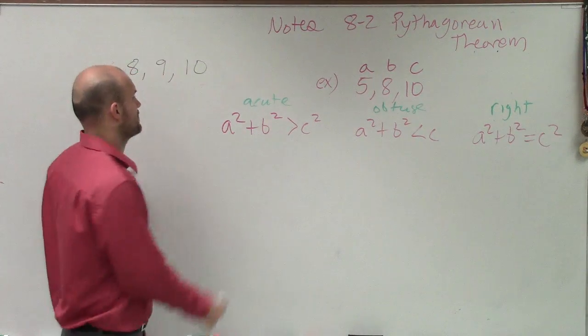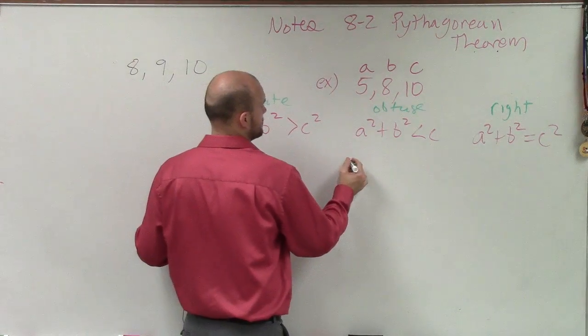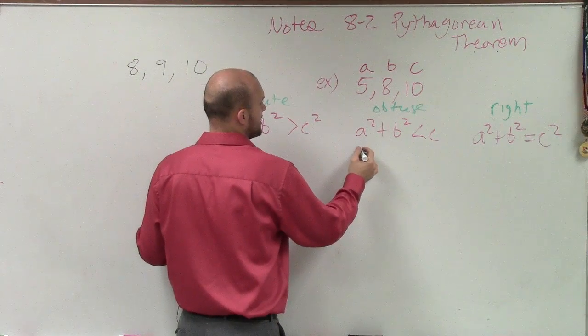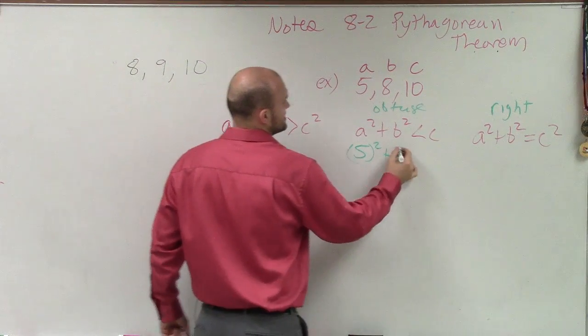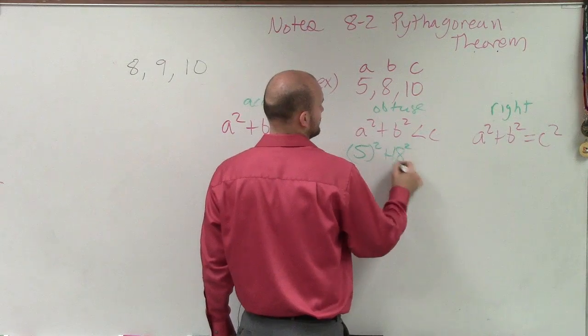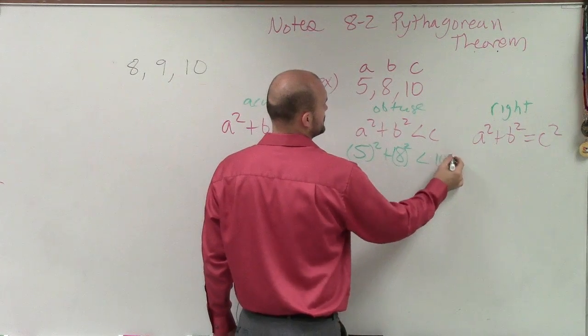So let's take a look. We only need to do it once. So I have 5 squared plus 8 squared, and then less than 10 squared.